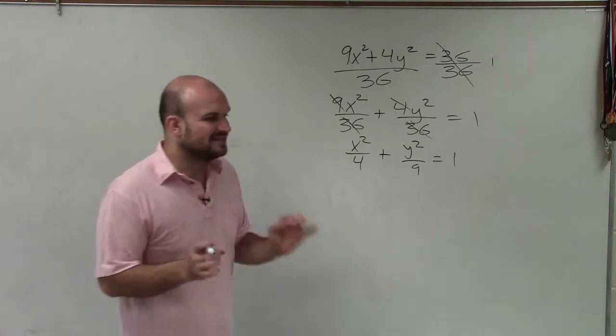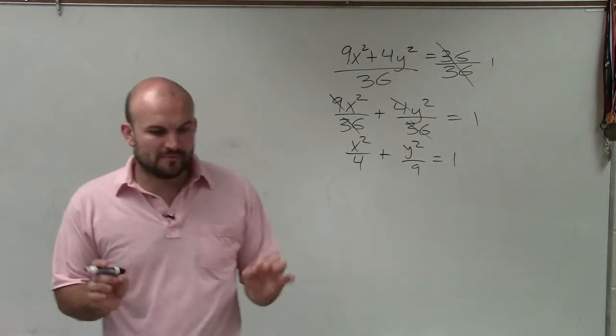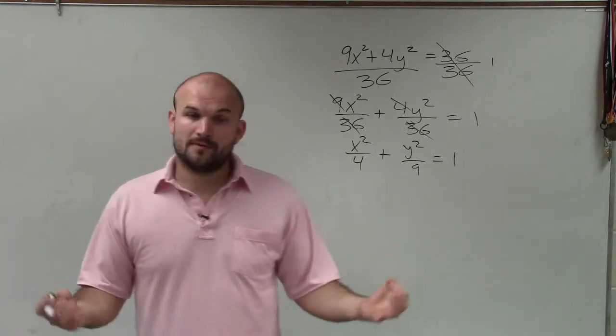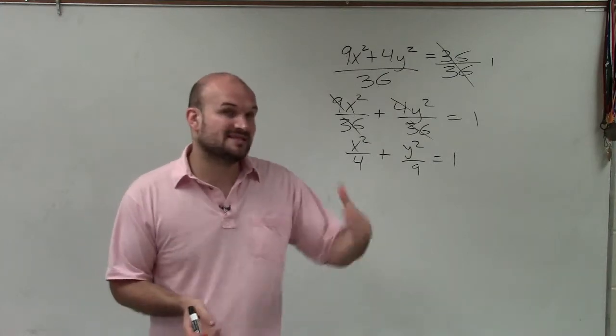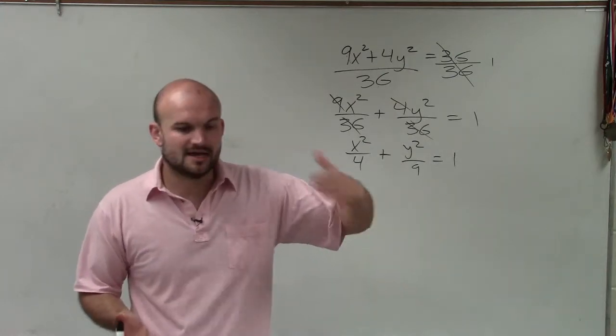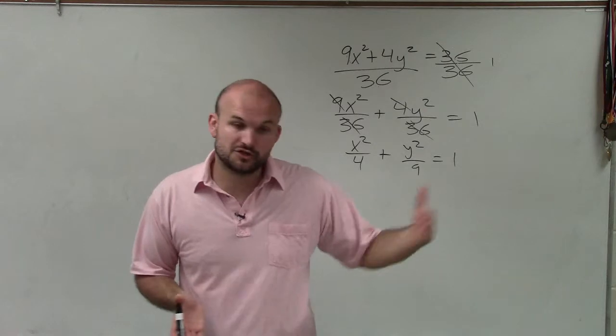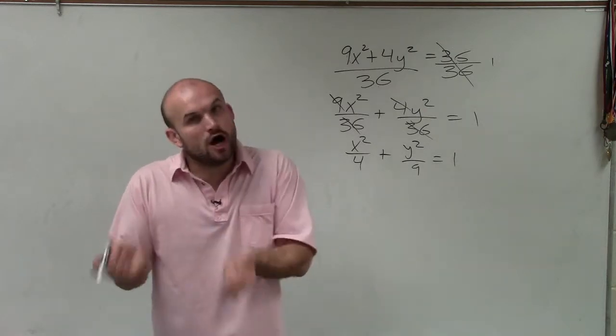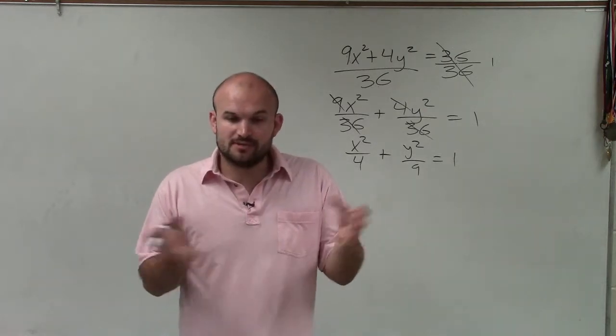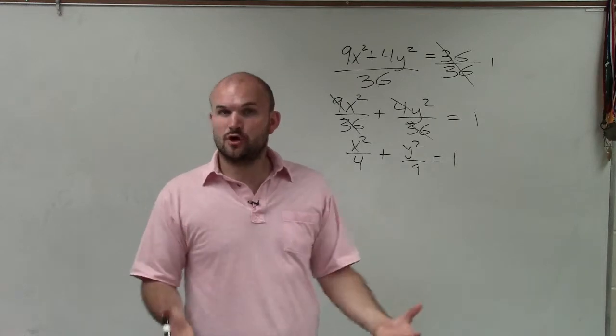Now, when we're dealing with the ellipses, remember we have an a² and a b², where a represents the distance from the center to your vertices, and b represents the distance from the center to your co-vertices. a is always going to be larger. It's always going to be larger to your vertices than it is to your co-vertices.